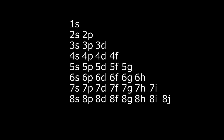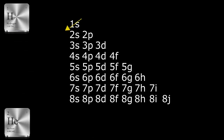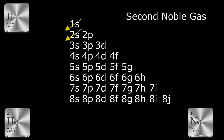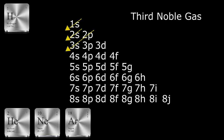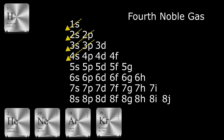To determine the filling order, we draw diagonals from right to left starting with the uppermost available subshell in the column. The first arrow goes through 1S, giving us hydrogen and helium. The next diagonal goes through 2S, and the next subshell to fill is 2P. When 2P has its full complement of six electrons, we are at our second noble gas, neon, with 10 orbiting electrons. Then we fill 3S. When 3P is completely full with its six electrons, we are at our third noble gas, argon, with 18 orbiting electrons. After the 3P→4S arrow, we go back to 3D and then to 4P, bringing us to our fourth noble gas, krypton, with 36 orbiting electrons.